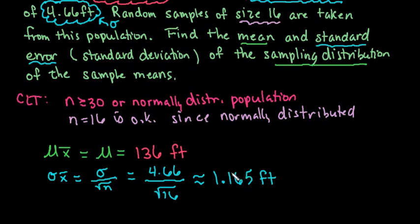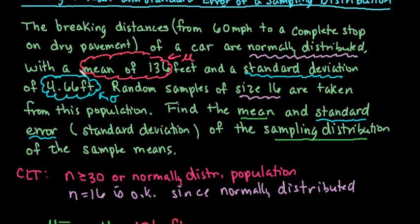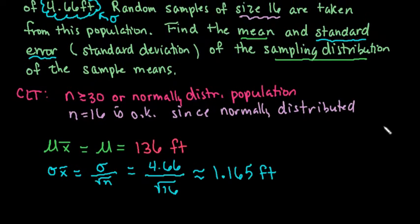What this tells us is that on average, each of our sample means is going to differ from the population mean by approximately 1.165 feet. So if we were to look at these two distributions side by side, the original distribution would spread out 4.66 feet in each direction from the mean, whereas the sampling distribution of the sample means would only spread out by 1.165 feet — it narrows the distribution.